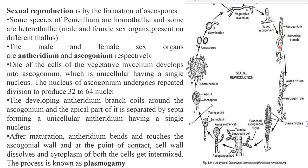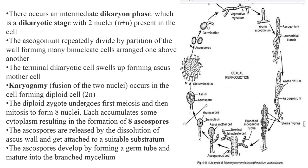The developing antheridium branch coils around the ascogonium. The apical part separates by septa, forming a unicellular antheridium having a single nucleus. After maturation, the antheridium bends and touches the ascogonium wall. At the point of contact, the cell wall dissolves and the cytoplasm of both cells gets intermixed. This process is called plasmogamy, and there occurs an intermediate dicaryotic phase with two nuclei present in the cells.